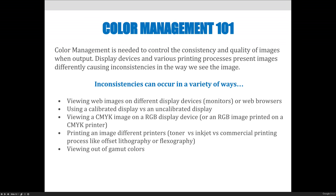We can have issues if we print an image using different types of printers. The two most common are toner-based or laser printers, which print with powder, and inkjet printers, which print with liquid ink. If your printer says warming up, it's toner-based. If the machine shakes and a head moves back and forth printing in lines, it's an inkjet. The way ink or color is applied to paper differs, causing inconsistencies. For commercial output, different printing processes — offset lithography, flexography, screen printing — can also affect color differently.